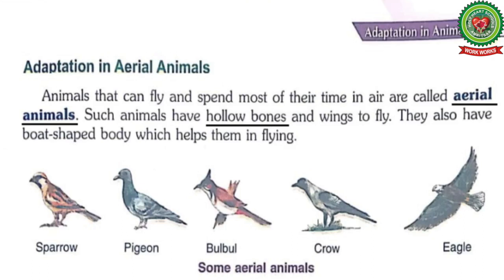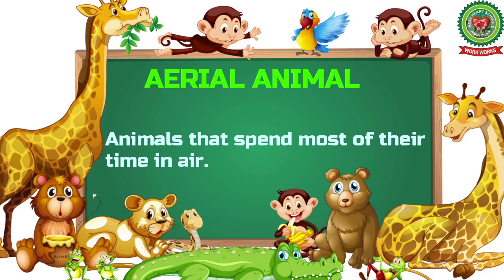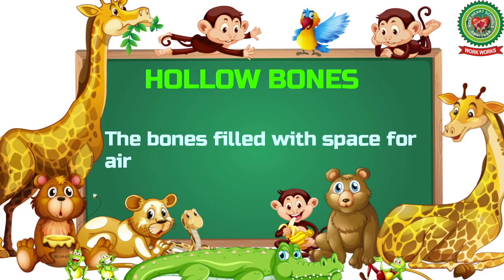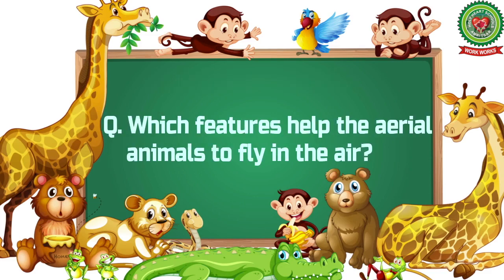Turn to page number 43 and let's start reading from the topic: adaptation in aerial animals. Underline the word 'aerial animals'. The definition of aerial animals is: animals that spend most of their time in air. Underline the word 'hollow bone' and write down its meaning: the bones filled with space for air.